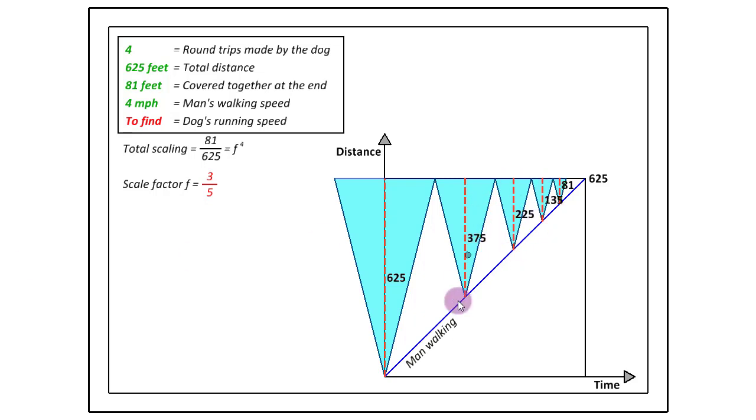Because we know these distances now, we can even mark the meeting points of the dog and his master. So we can now add all these distances: 625 plus 375 as a return trip, then again 375 in this direction. Similarly, 225 twice, 135 twice and 81. So again, if we add all these distances, then we will get the total distance covered by the dog to be 2176.